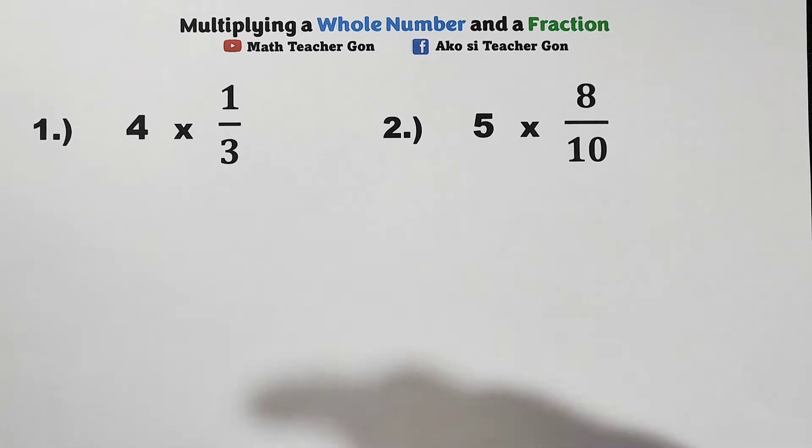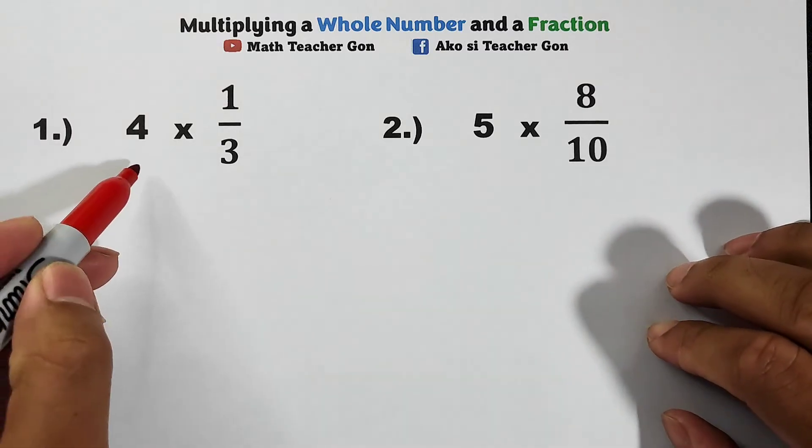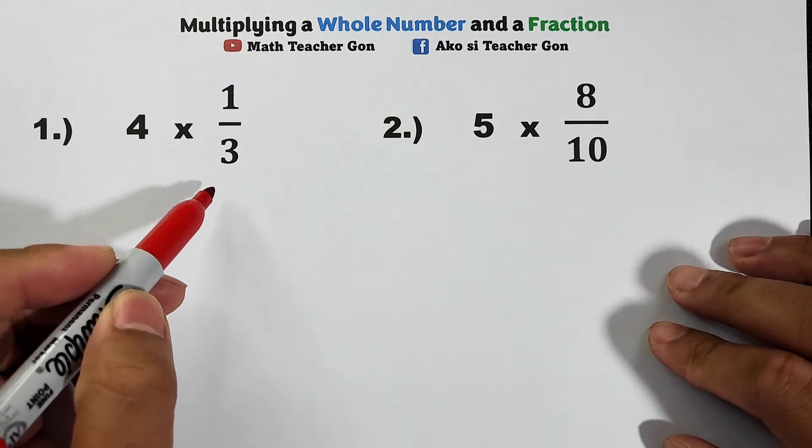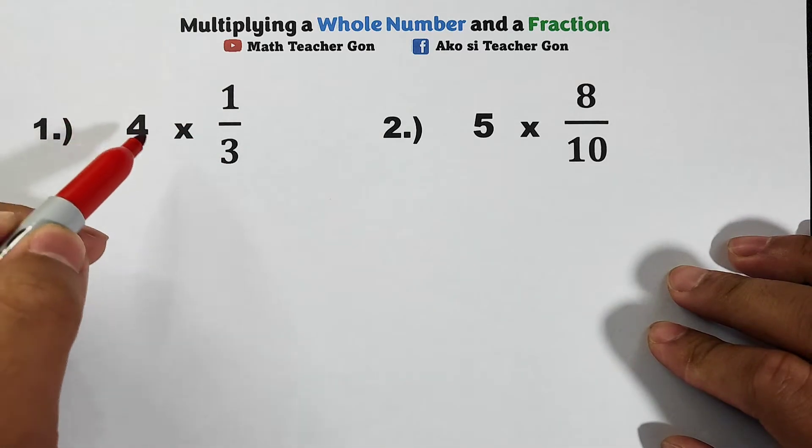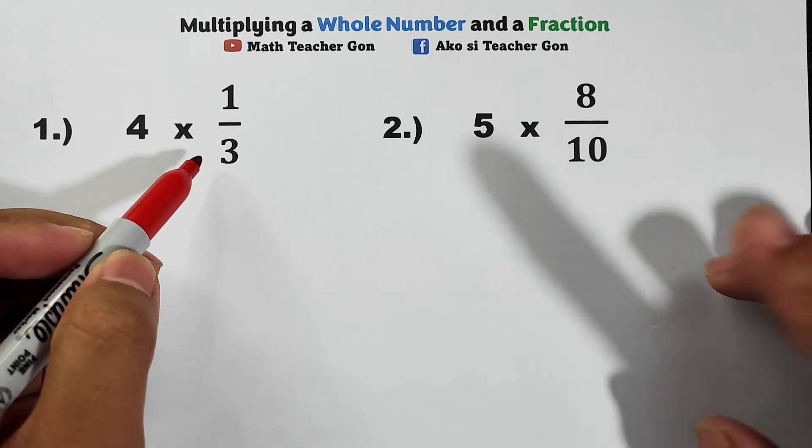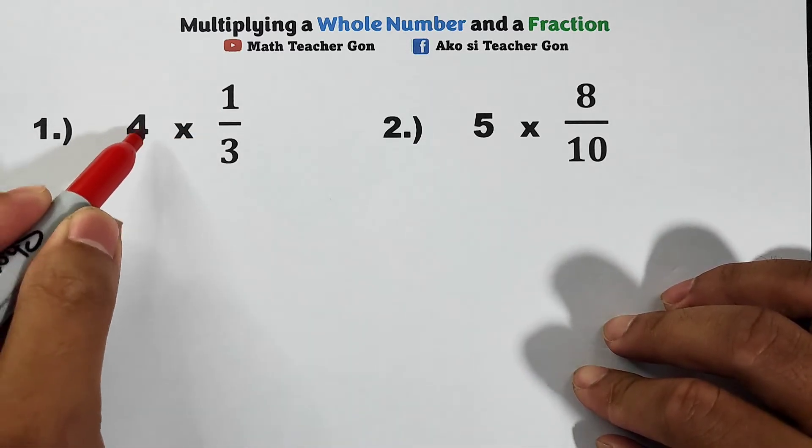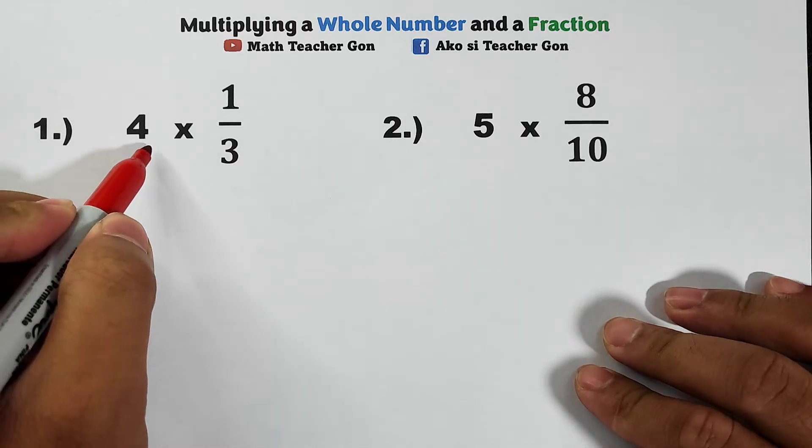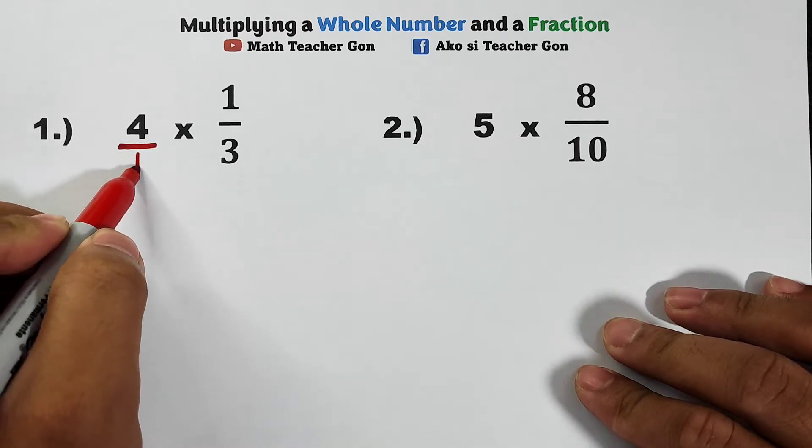First, in number one we are given 4 times 1/3. This is your whole number to be multiplied by a fraction. First step is to express this whole number into a fraction by putting a denominator of 1.